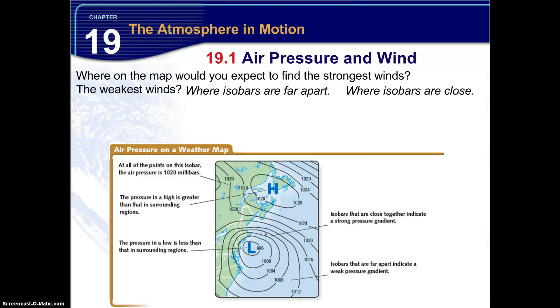Now the weakest are where isobars are farther apart. Such as down here, you see the space in between the 1,000, 1,004, 1,008, 1,012, 1,016. So the larger area, that means the weaker winds.